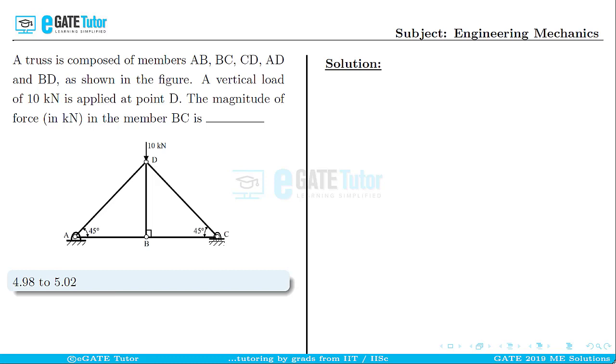This question is from Engineering Mechanics for two marks. The truss is composed of members AB, BC, CD, AD, and BD as shown in the figure. A vertical load of 10 kN is applied at point D. The magnitude of force in kN in the member BC is: